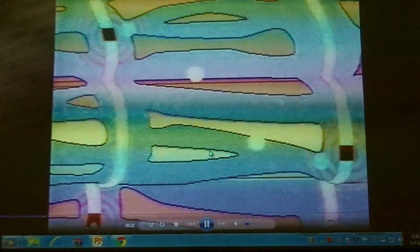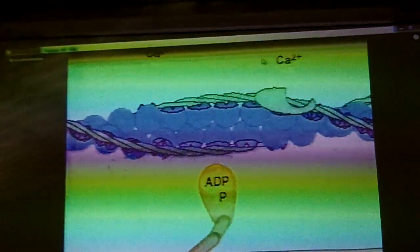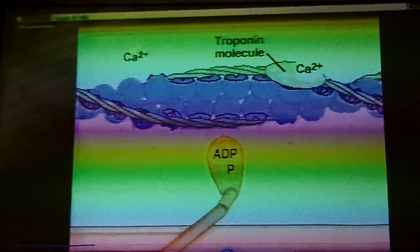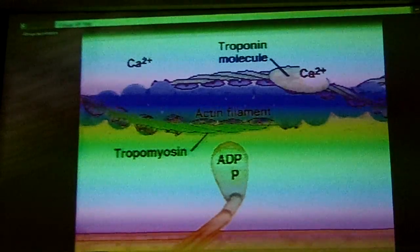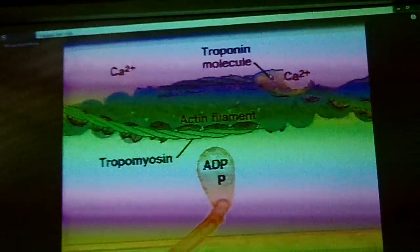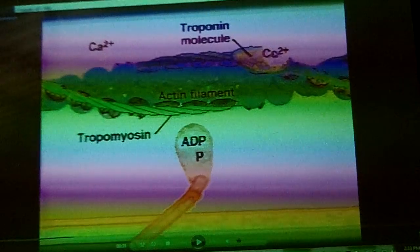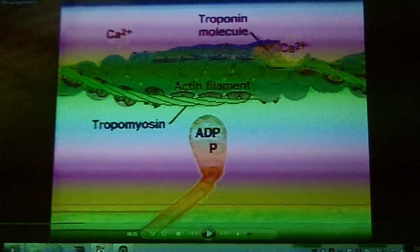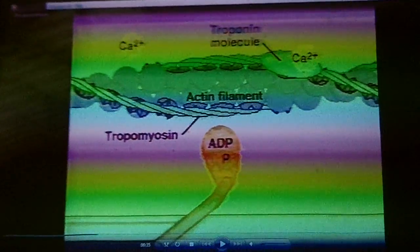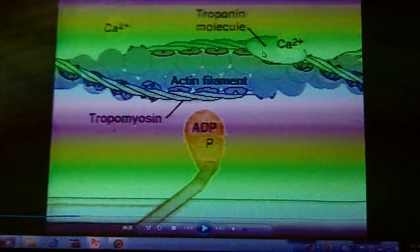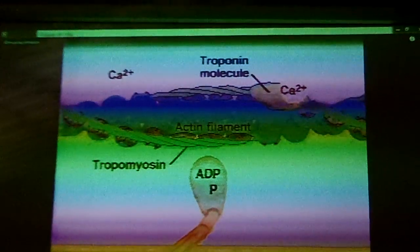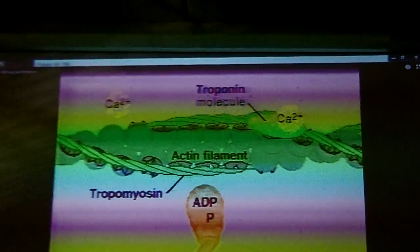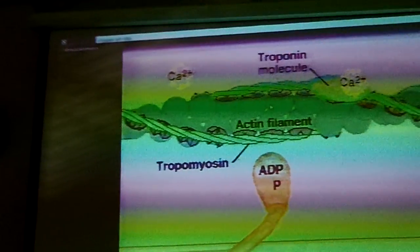As the calcium is released from the sarcoplasmic reticulum, whenever a nerve signal goes to your muscle, the calcium is released. The calcium goes in and it binds to a receptor protein called troponin that's on the actin filament. The troponin is attached to this tropomyosin filament here. And when the calcium is received by the troponin, it and the tropomyosin move and expose myosin binding sites on the actin filament.